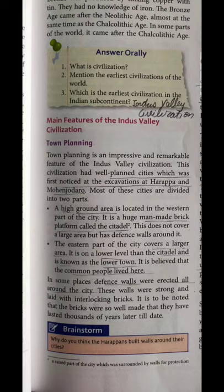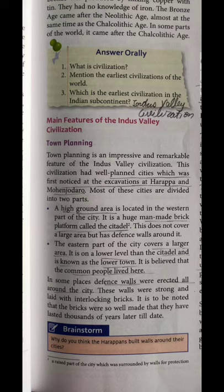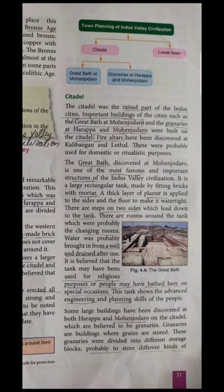We are going to discuss town planning of the Indus Civilization in detail. The town is properly well planned. The main sites are Harappa and Mohenjodaro. The Citadel is there and the Lower Town is there. The Citadel is further divided into two parts: the first is the Great Bath at Mohenjodaro, and the second is the Granaries at Harappa and Mohenjodaro.